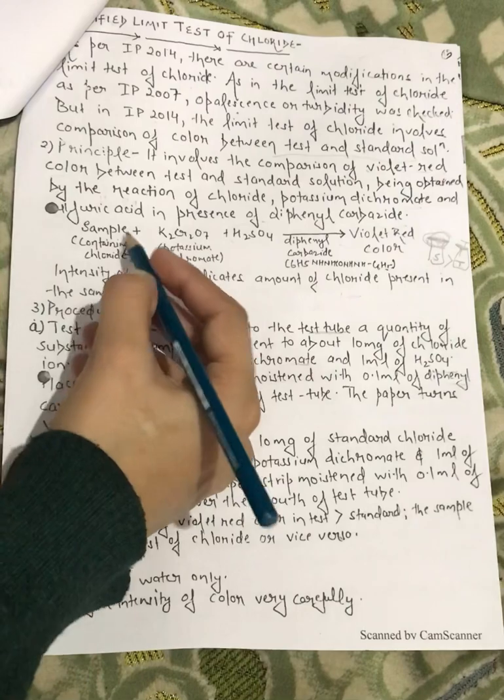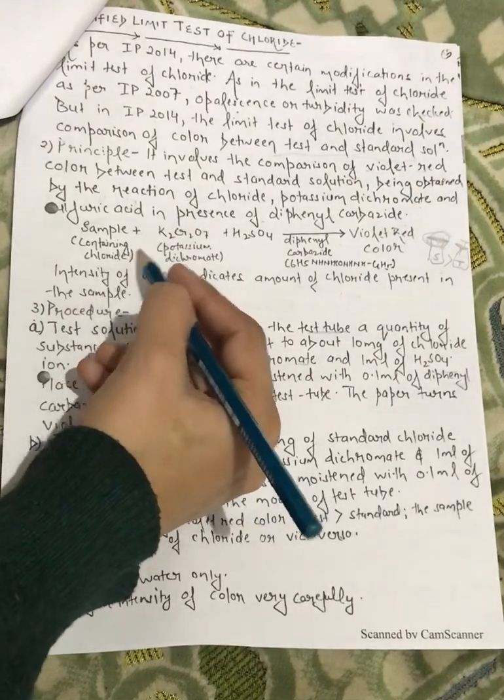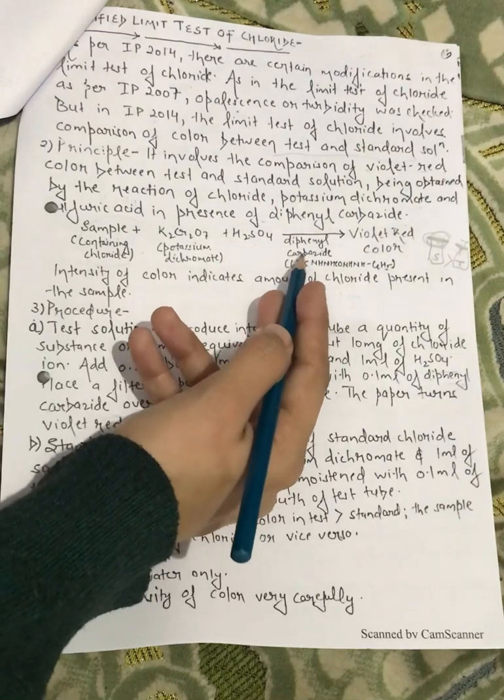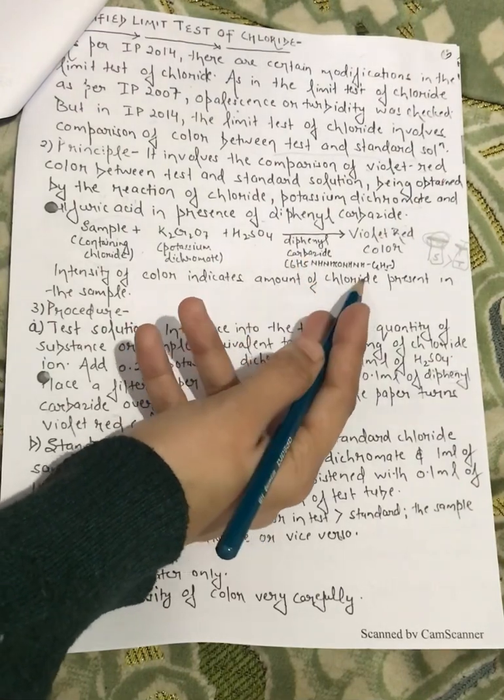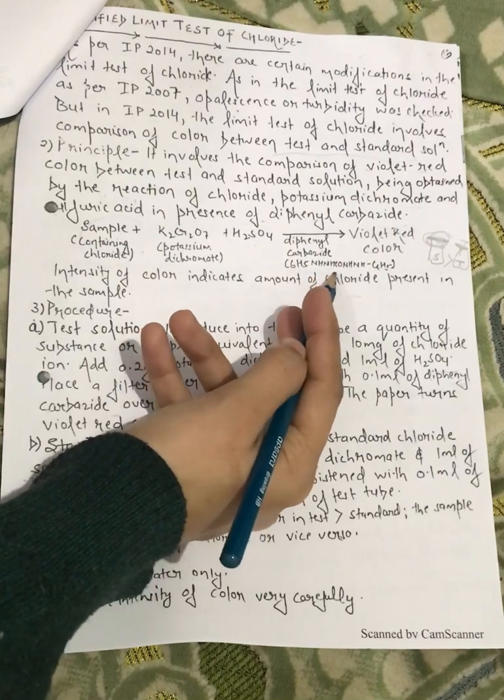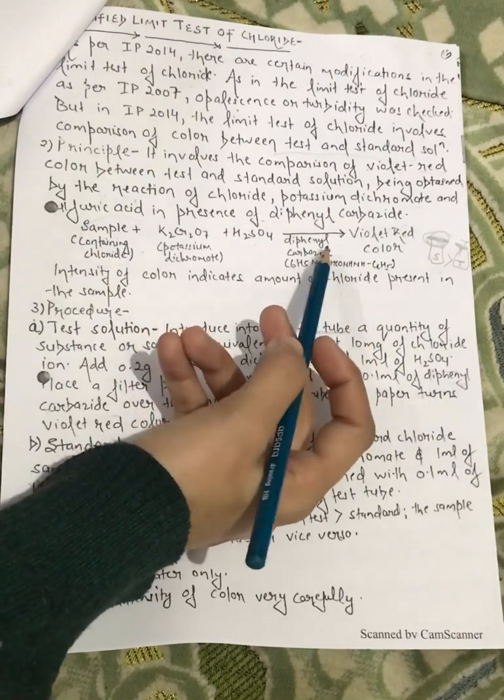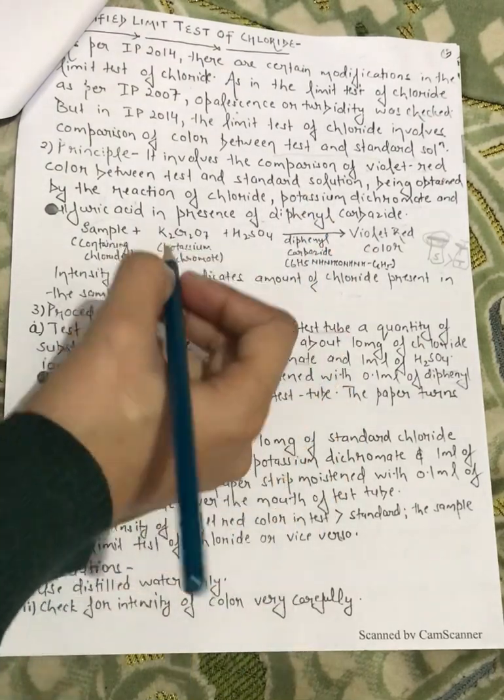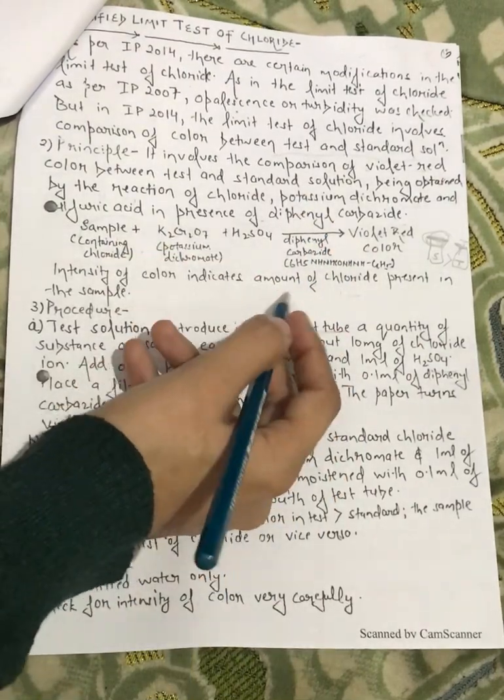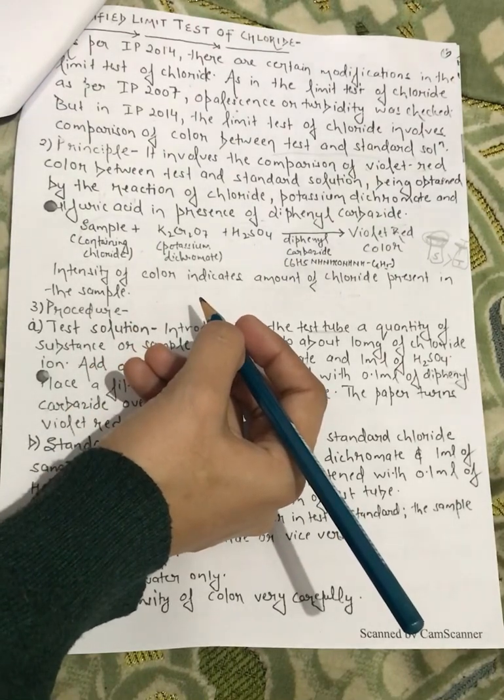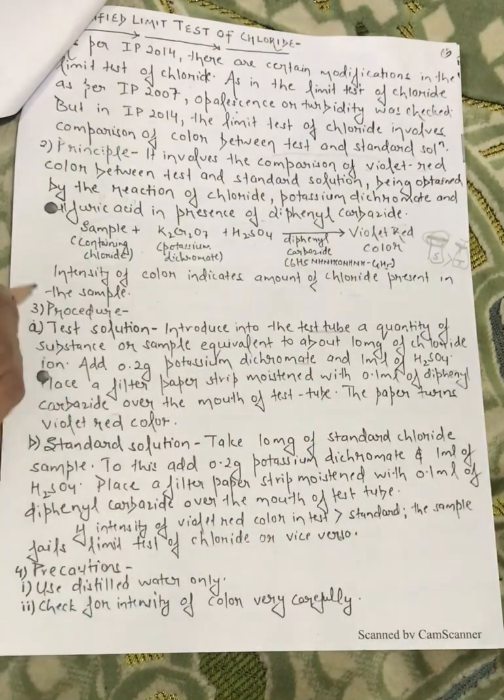This is the reaction involved. This is the sample containing chloride. It is reacting with the potassium dichromate and sulfuric acid in the presence of diphenyl carbozide. This is the formula of diphenyl carbozide: C6H5NHNHCONHNHC6H5. And we will see violet red color. Now we will tell the intensity of color, the amount of chloride present in the sample. The more intense, the more chloride.